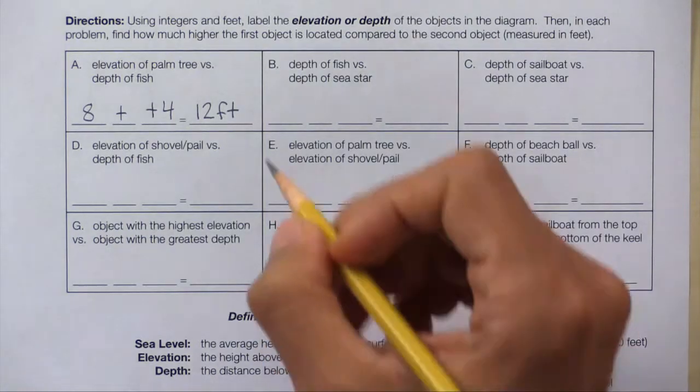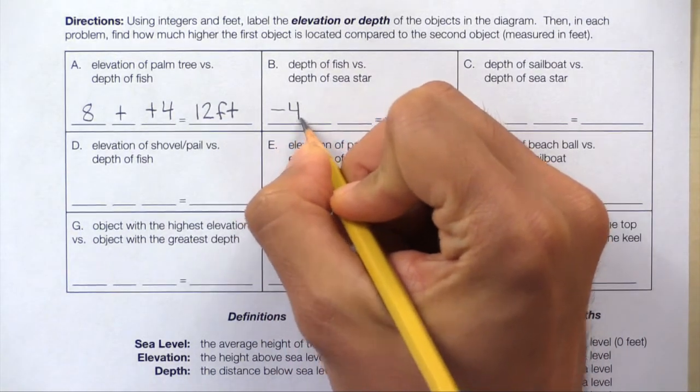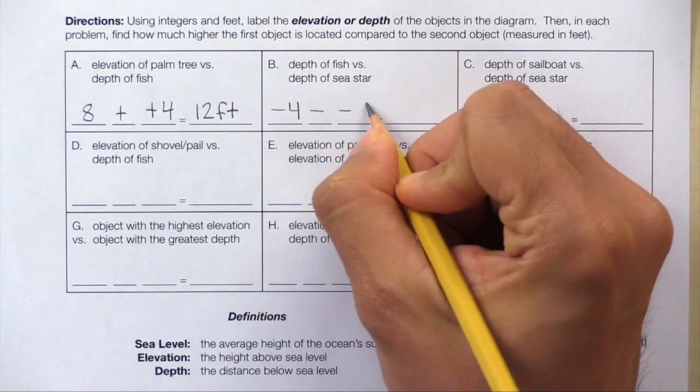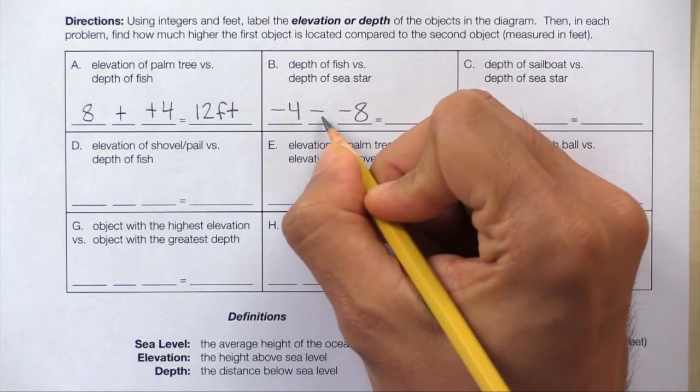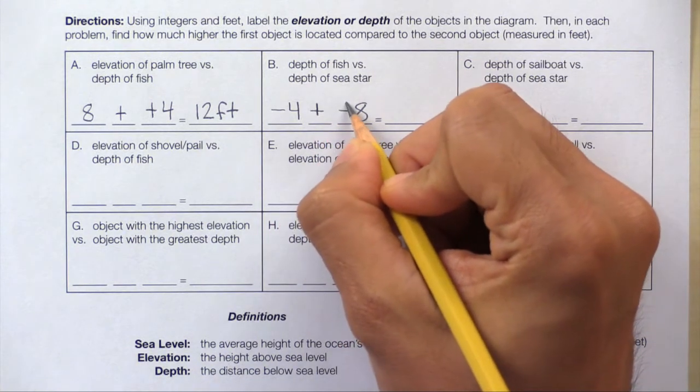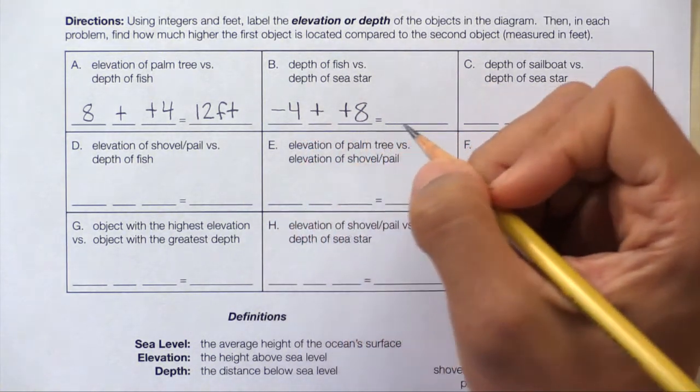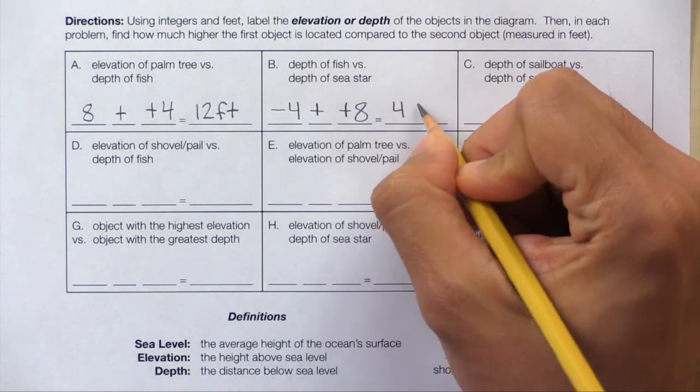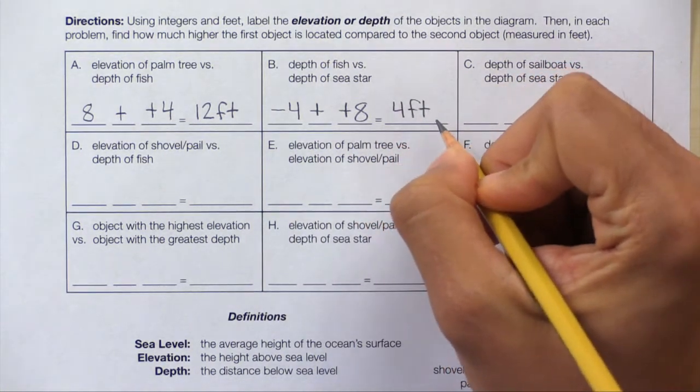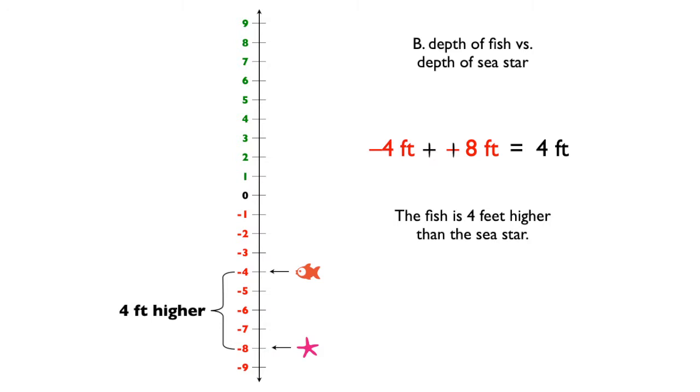Here is negative 4 minus negative 8. Use two strokes to add the opposite. 1, 2. Negative 4 plus 8 equals 4 feet. So the fish is 4 feet higher than the sea star.